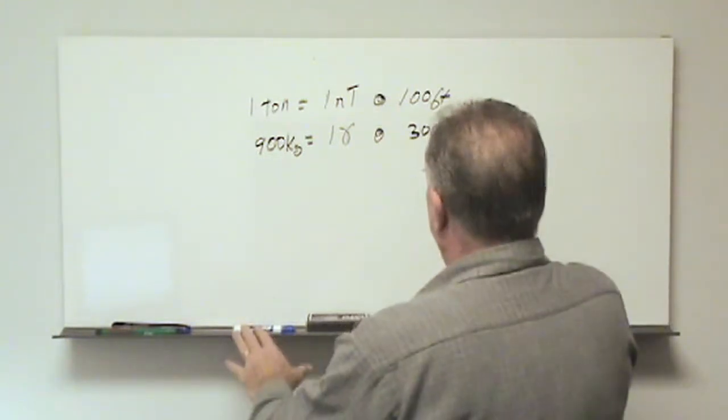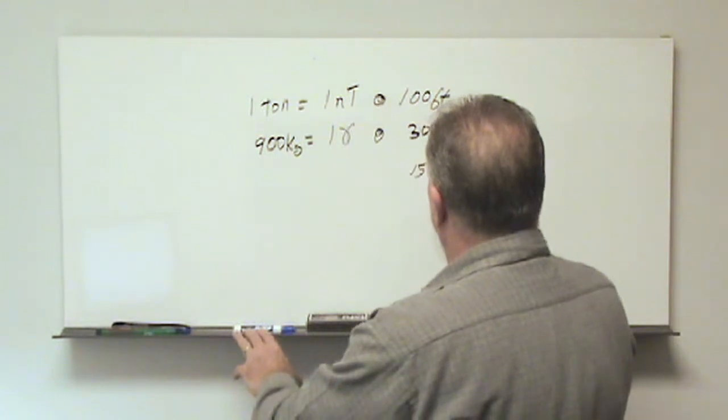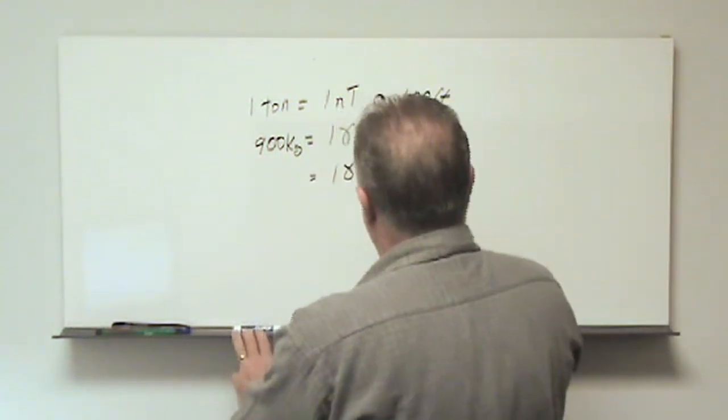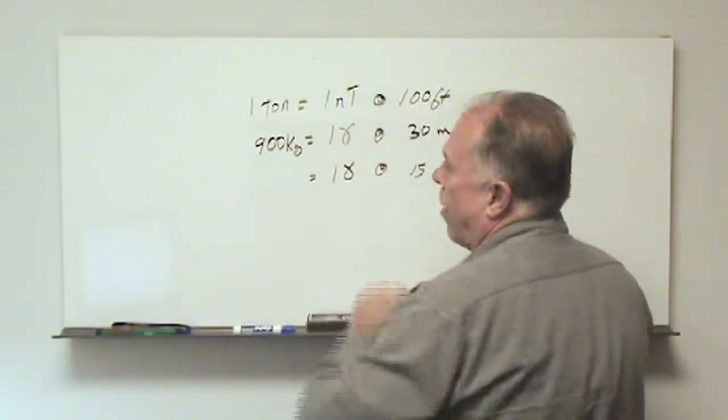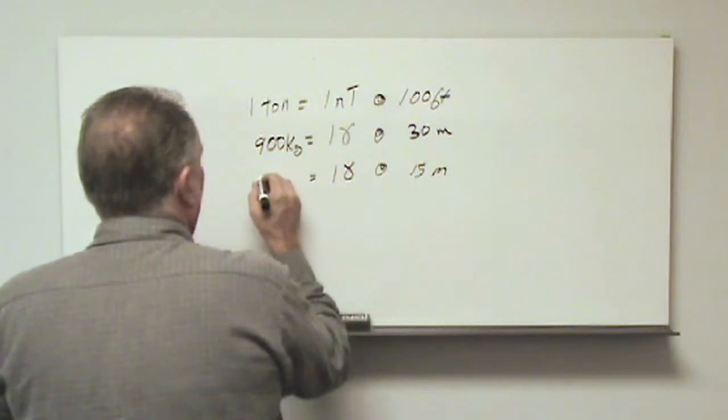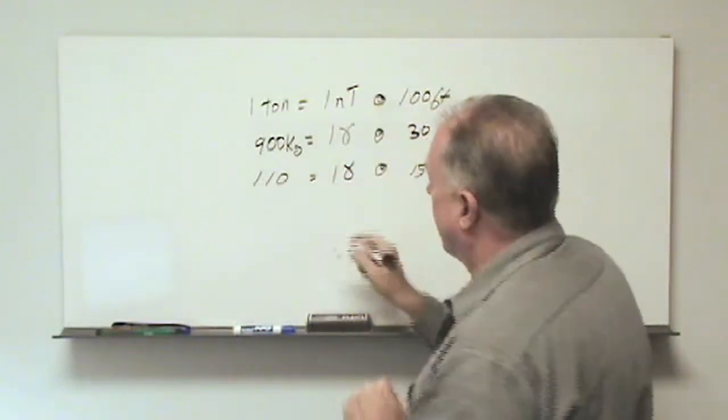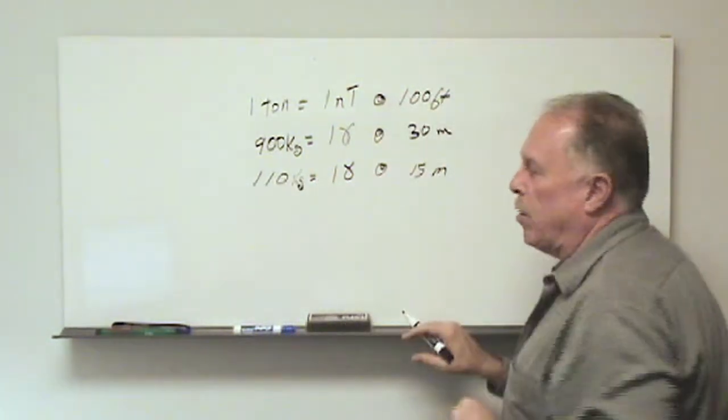And then as we lower the range, in other words if we went to 15 meters, we would still see the one nanotesla or one gamma and the mass would then go down by a factor of eight. So we would see approximately 110 kg would give us one nanotesla at 15 meters.